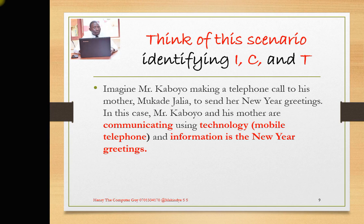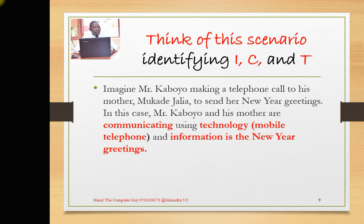So in this case, Mr. Kaboyo and his mother are communicating using technology. The technology we are talking about is going to be the hardware — the mobile phones they are actually using. So we have identified the T. And the information is the New Year greetings — what Mr. Kaboyo is telling his mother. That is the information being communicated.